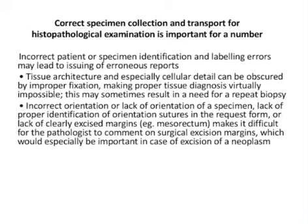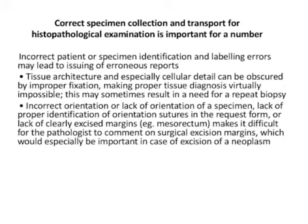Incorrect orientation or lack of orientation of a specimen, and lack of proper identification, can be problematic. For example, if there is no margin indicated, we cannot do proper gross sectioning and we can miss out on the part of the tissue we need to diagnose. Correct sample collection is absolutely necessary. If we neglect collection steps, we will compromise our tissue diagnosis.